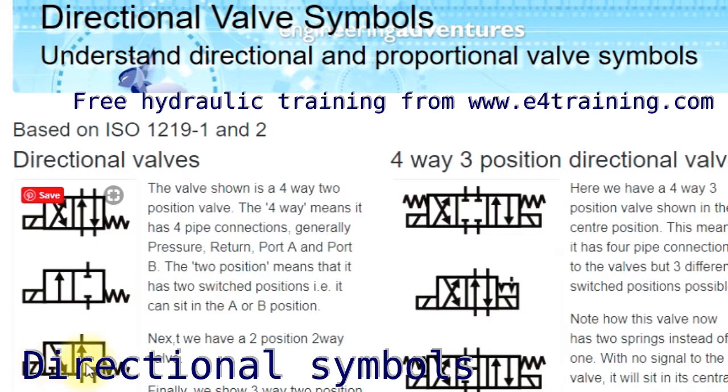So the next valve we've got is a two position three way. So this will probably be the pressure port, A port, and the tank return port. In one condition it takes the flow through to the A port, and in any other condition it allows it to come back to the reservoir.